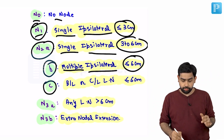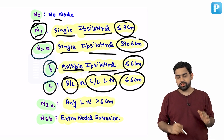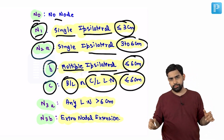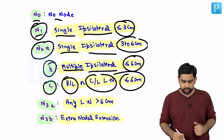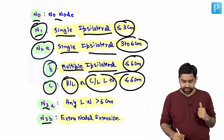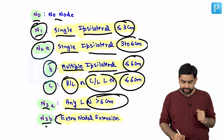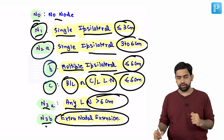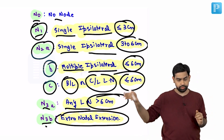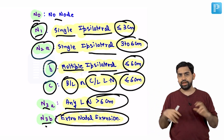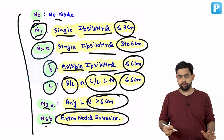N2C involves bilateral or contralateral lymph nodes, with size less than six centimetres. N3A is any lymph node more than six centimetres. N3B involves extra nodal extension, which has been added in the 8th AJCC as an independent prognostic factor.